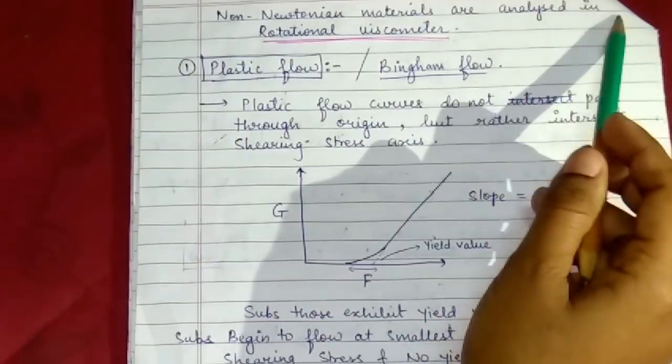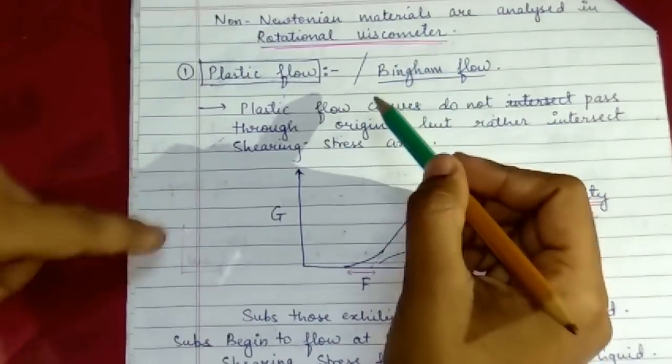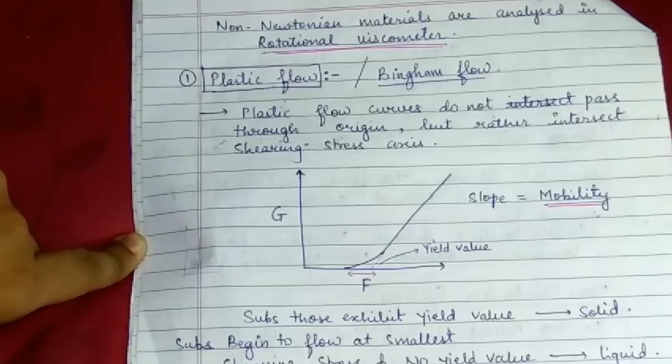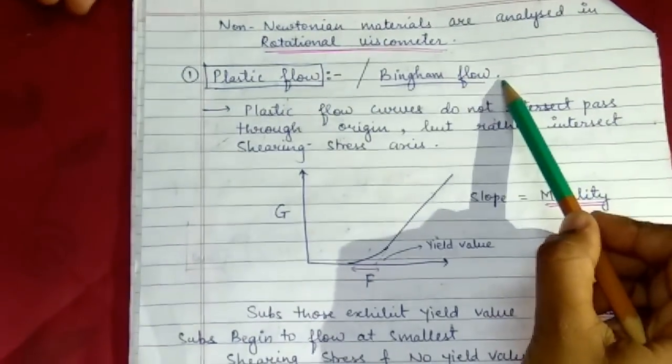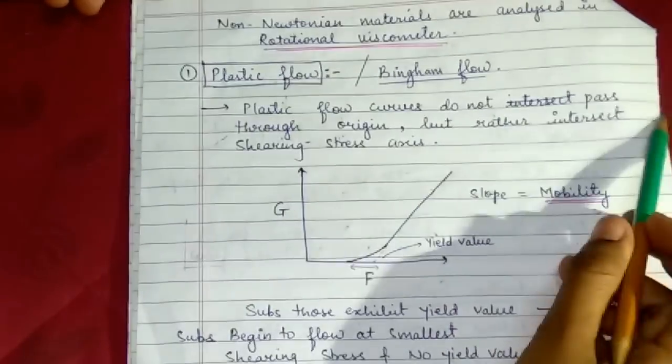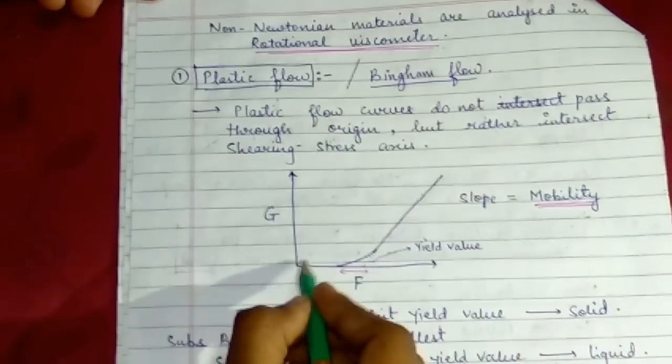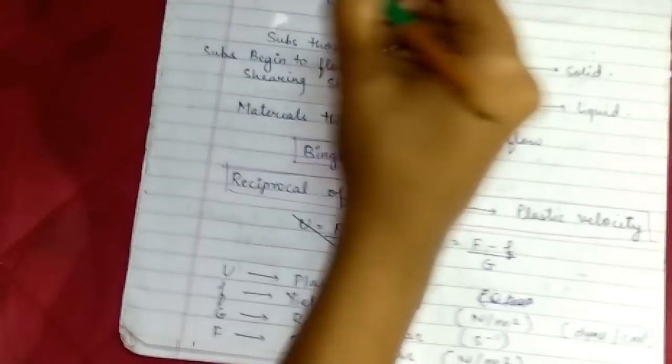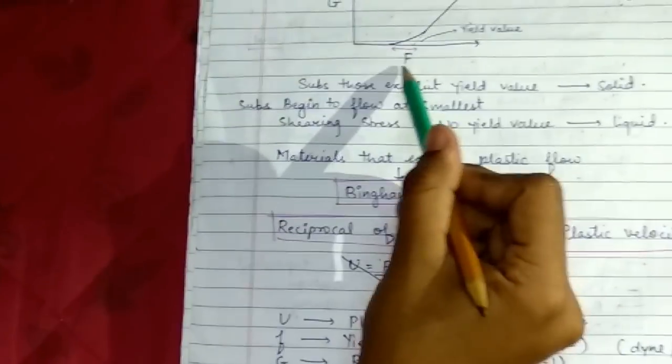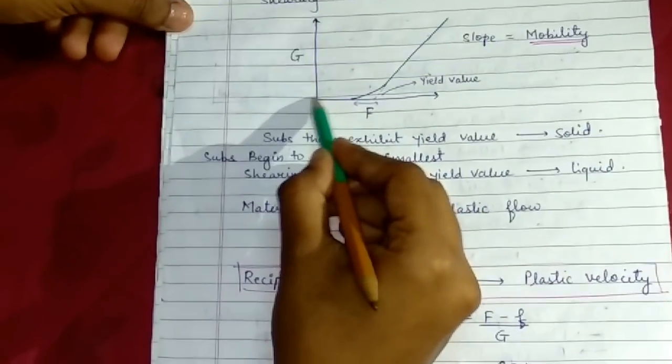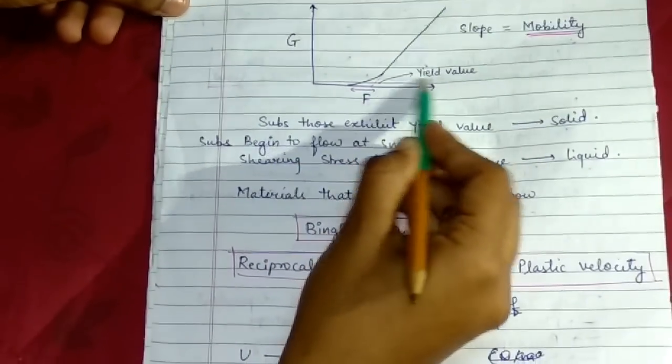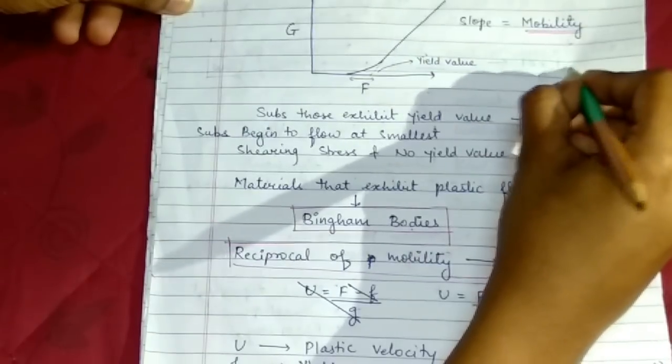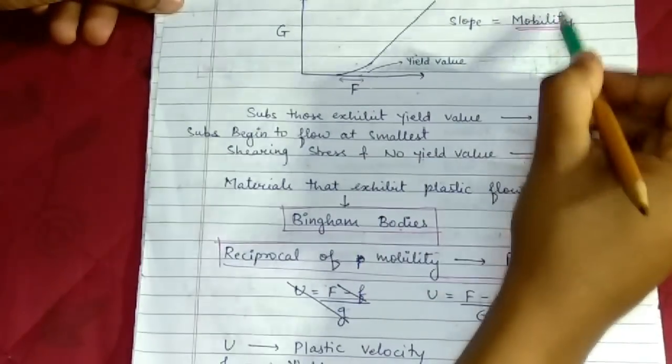The first type of flow is plastic flow, also called Bingham flow. Plastic flow curve does not pass through the origin, but rather intersects the shear stress axis. The graph is plotted between rate of shear versus shearing stress and does not start from origin. So there is yield value, also called lag time, and the slope for this curve is known as mobility.